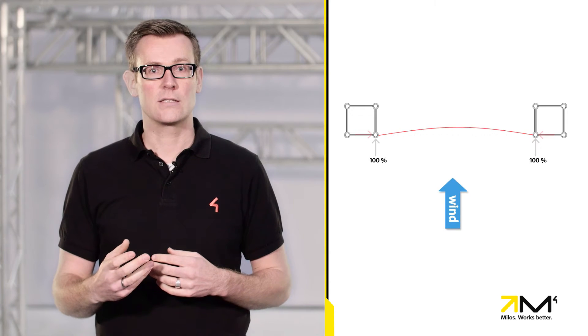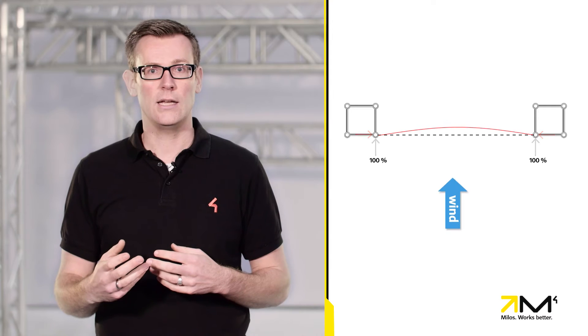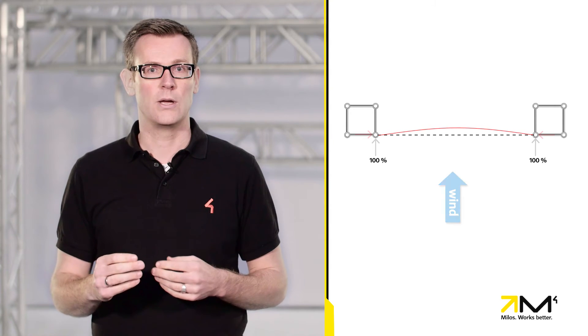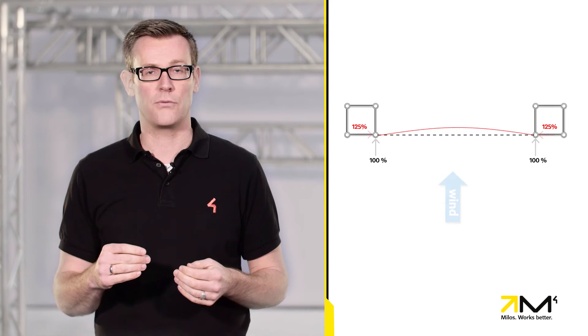The amount of tension is considered in accordance with the European standard for tents EN 13782 as an additional loading of 1.25 times the wind load.